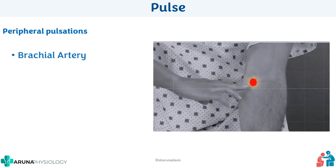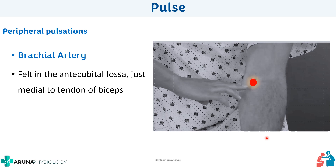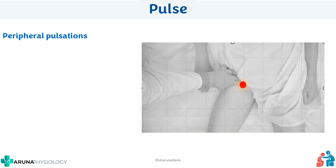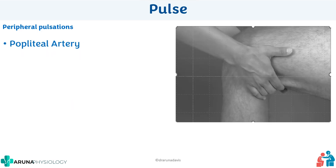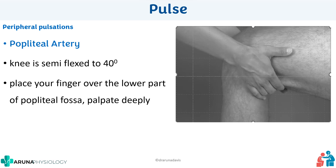The brachial artery pulsation is felt in the antecubital fossa just medial to the biceps tendon. The femoral artery pulsation is felt in the groin just below the inguinal ligament, midway between the anterior superior iliac spine and the pubic symphysis. For the popliteal artery, the knee should be in a semi-flexed position; place your fingers in the lower part of the popliteal fossa and palpate deeply, insinuating the fingers to feel the pulsation.